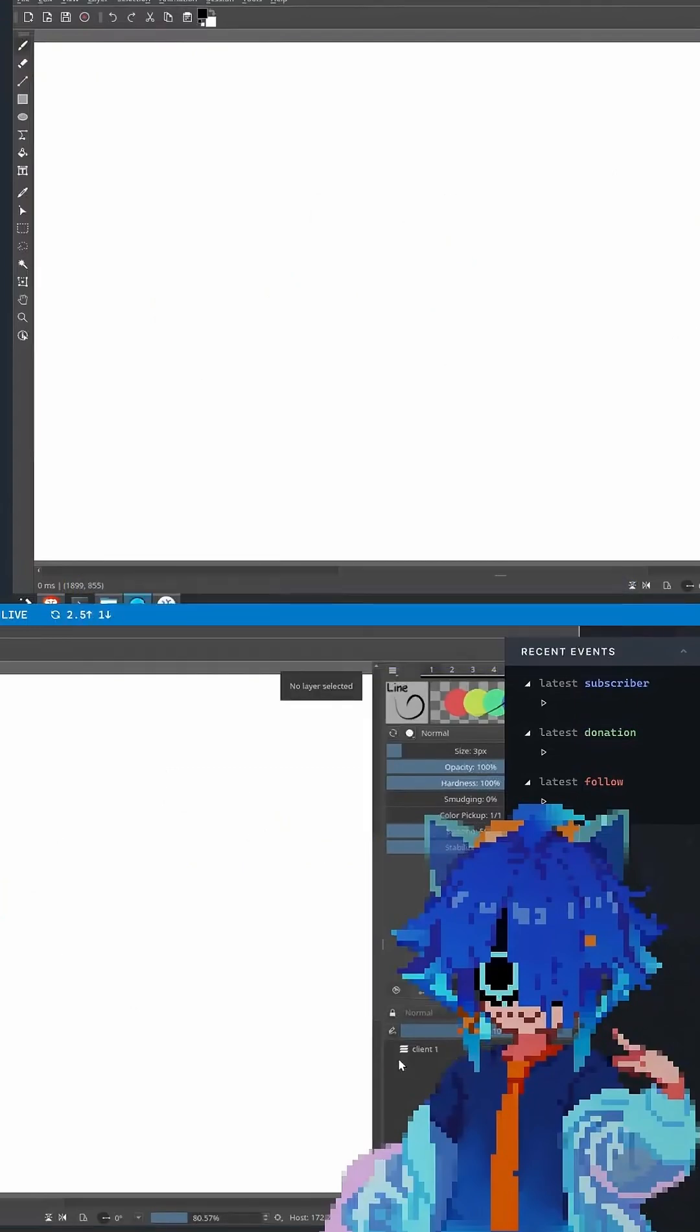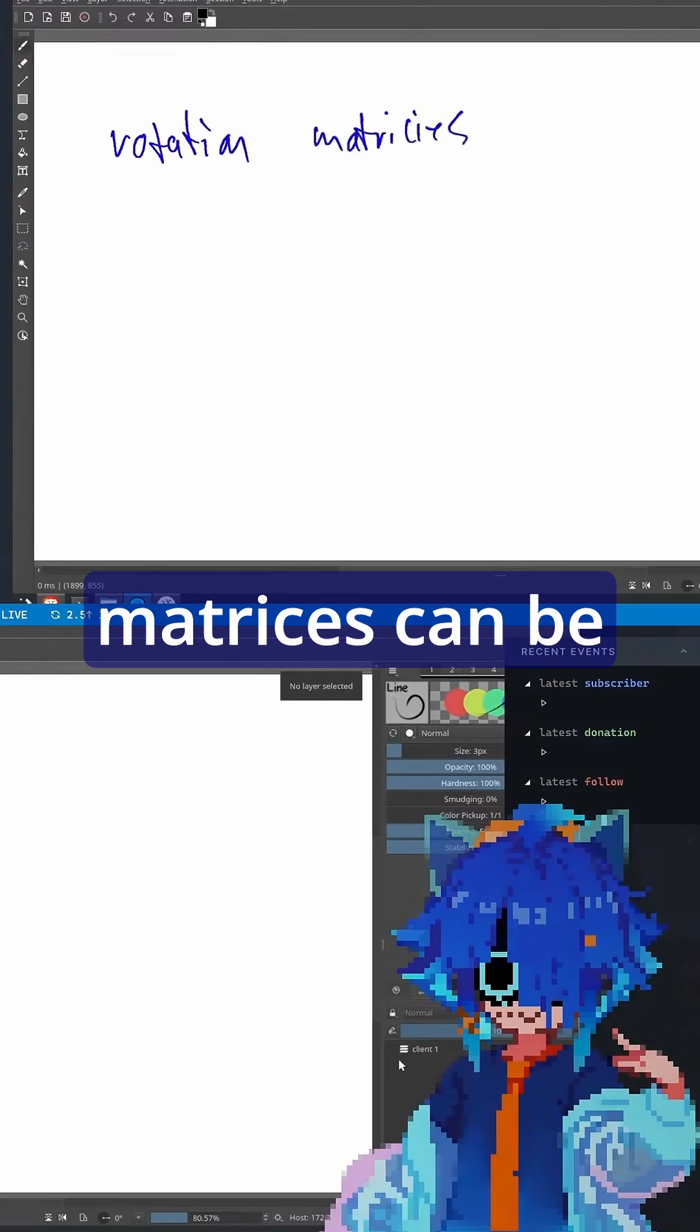What's the point of this over something else? Well, rotation matrices can be blended and they're pretty good, but to encode one you need nine floats.